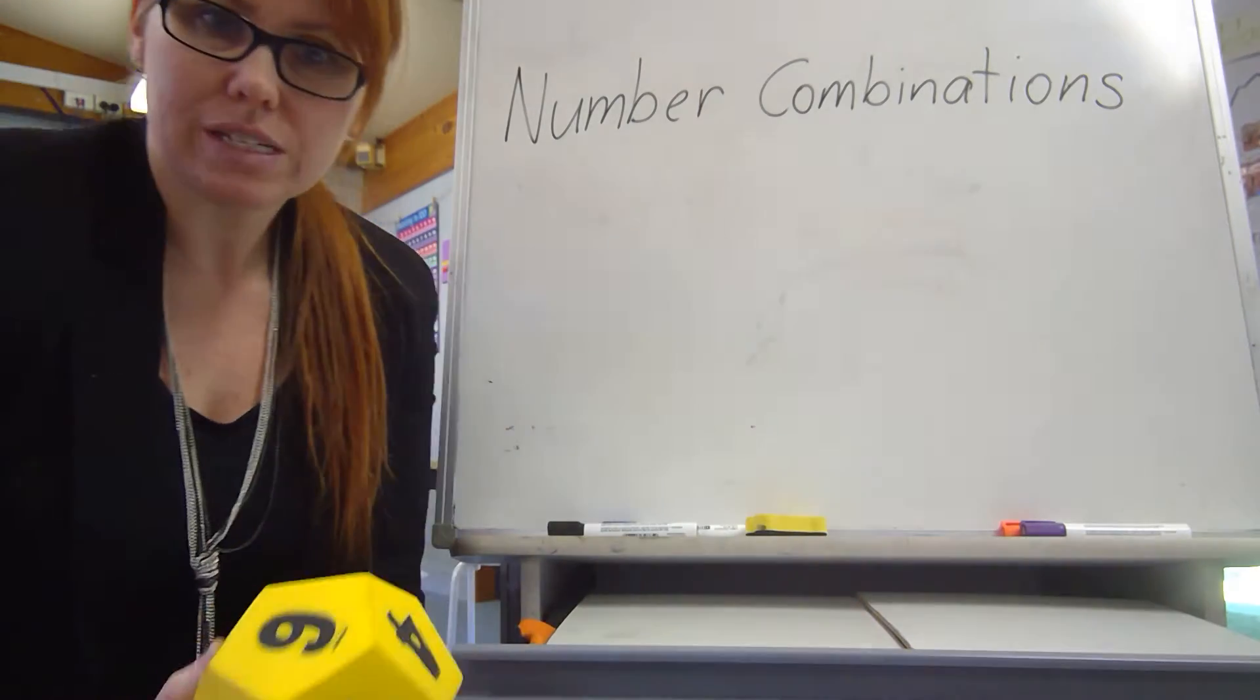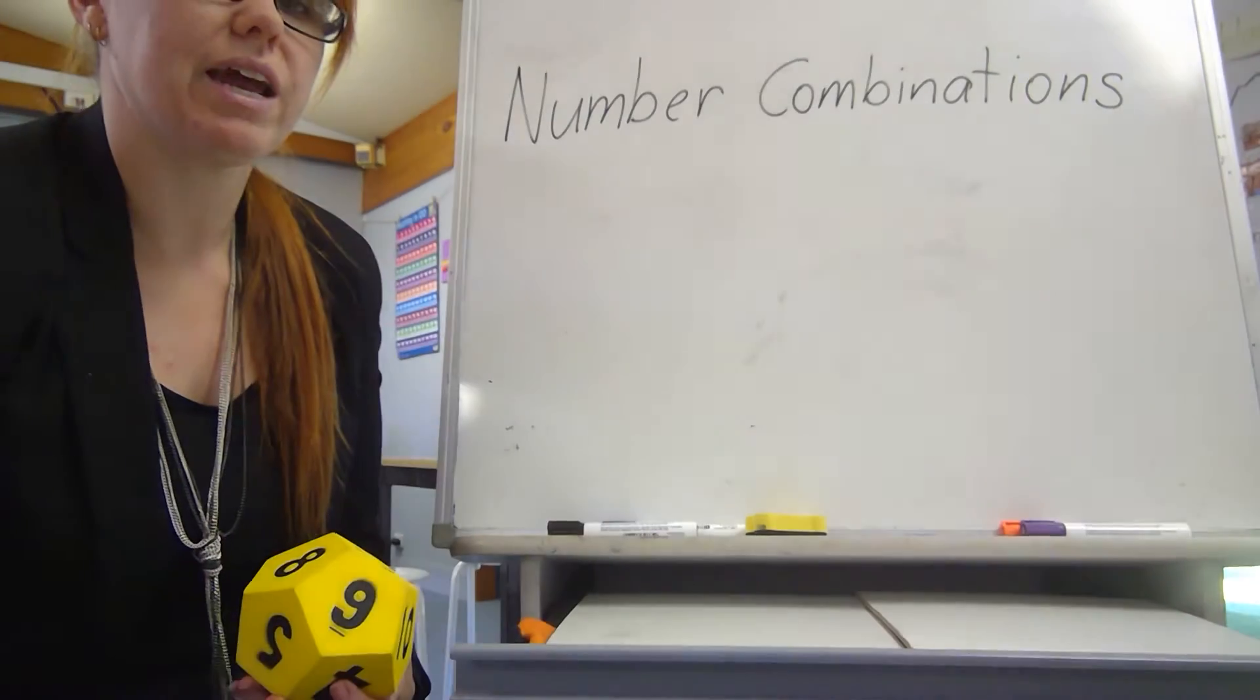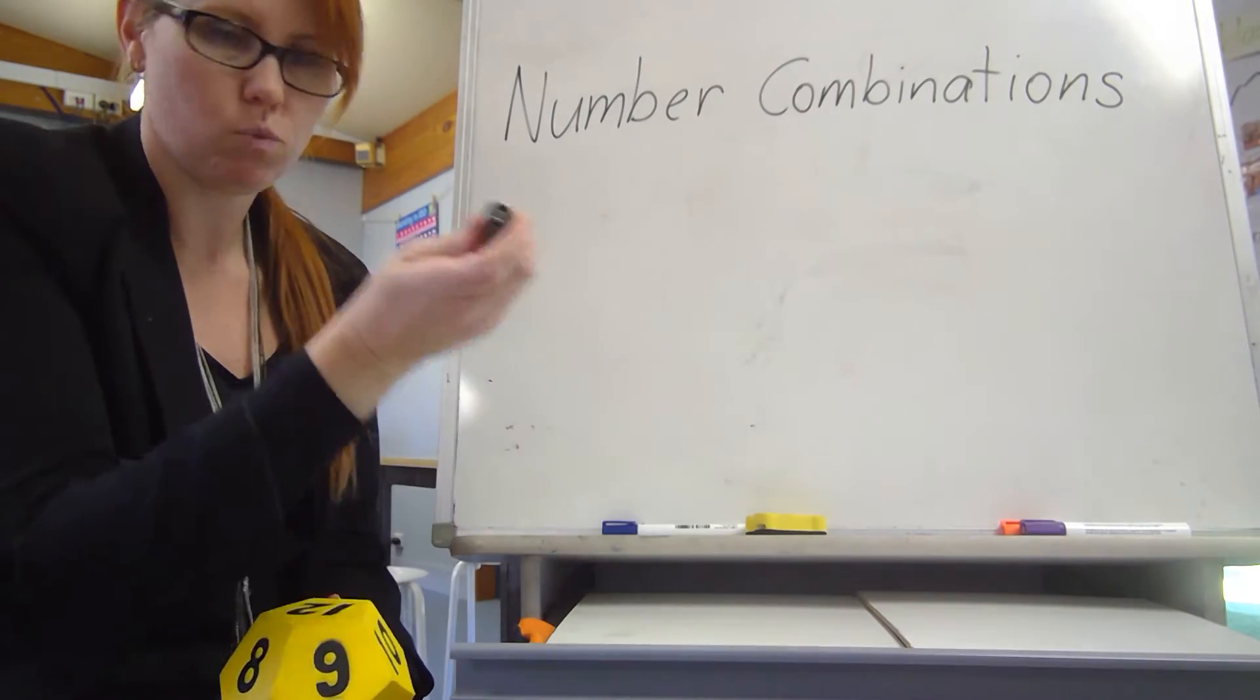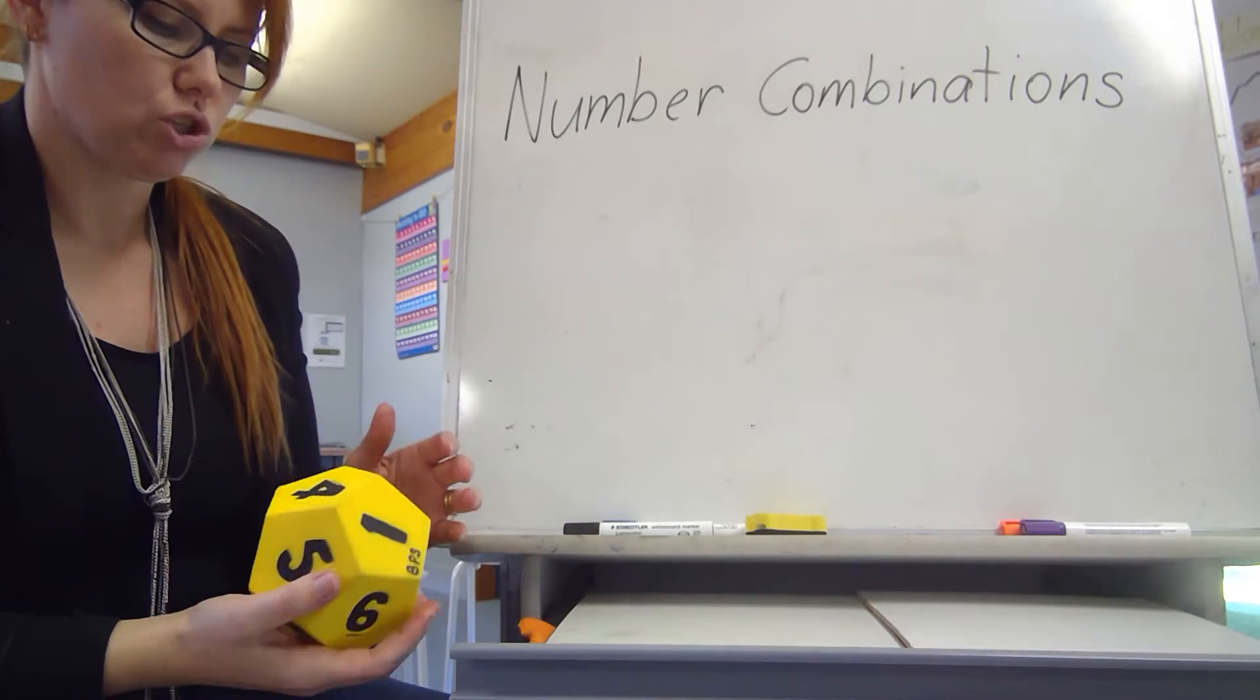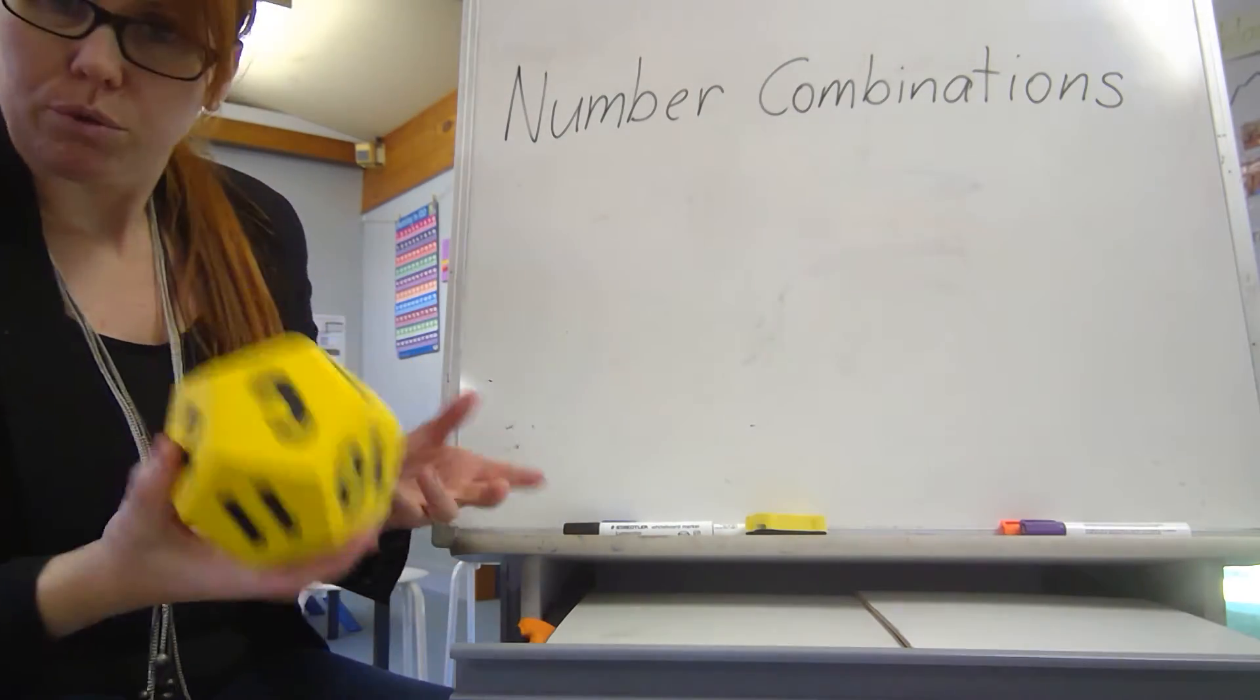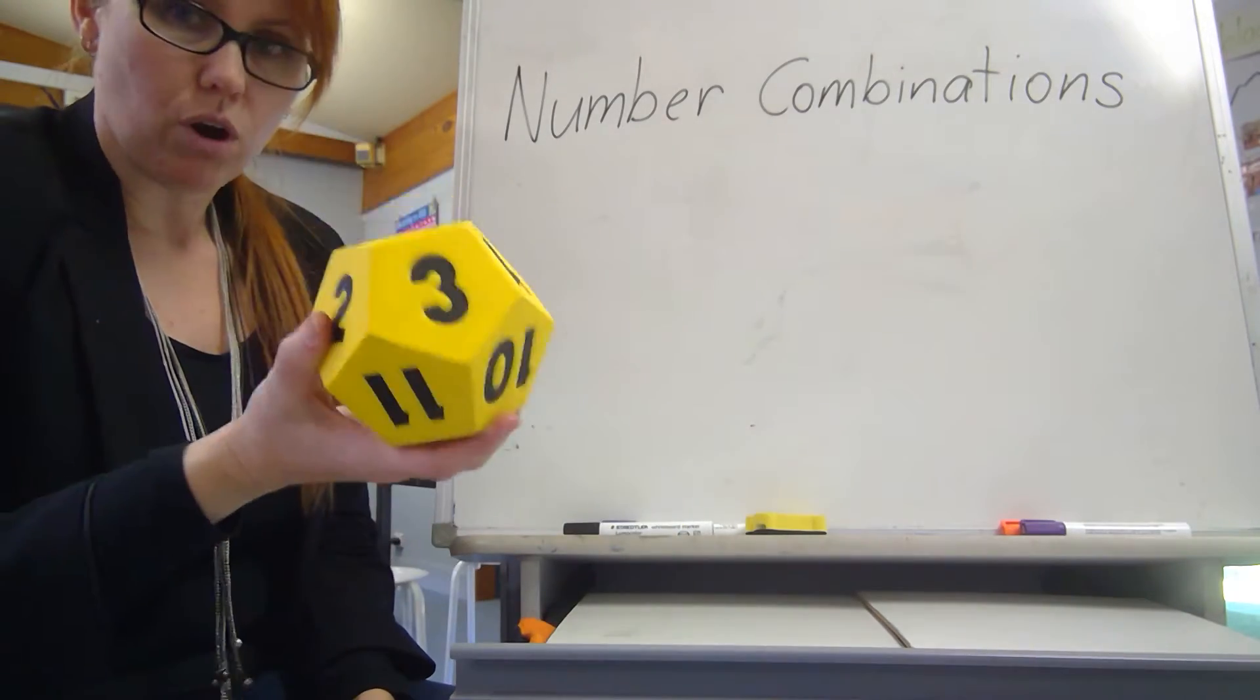So what you do for this activity is you'll need a whiteboard. Sometimes we use our little one but for today I'm going to use my big one. Whiteboard markers. I've got a couple of different colours today and the die that you're choosing to use. Remember, if you want to challenge yourself, you need to get a different die. So I'm going to roll and see what number I get.